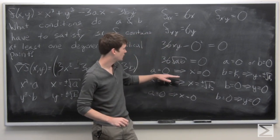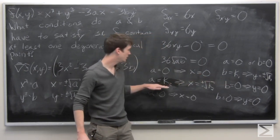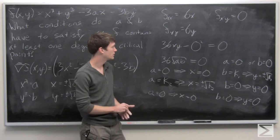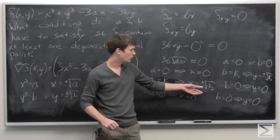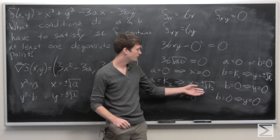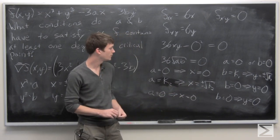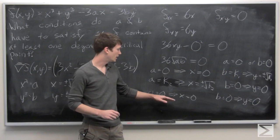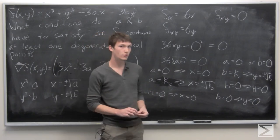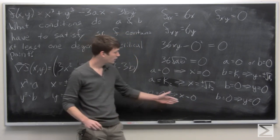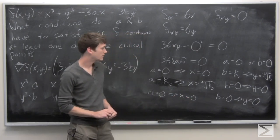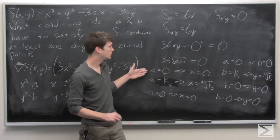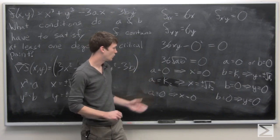If one of a or b is non-zero, then we have two critical points that are both degenerate, and they occur at plus or minus the square root of the non-zero term, with 0 as the other coordinate. If both a and b are equal to 0, then we have just one degenerate critical point, and that occurs at the origin when x and y are both equal to 0. So we have either two degenerate critical points or one degenerate critical point.